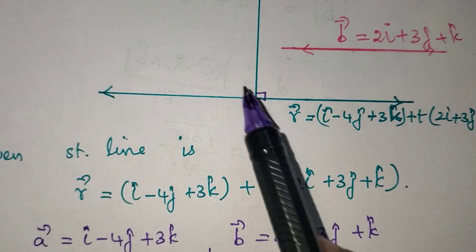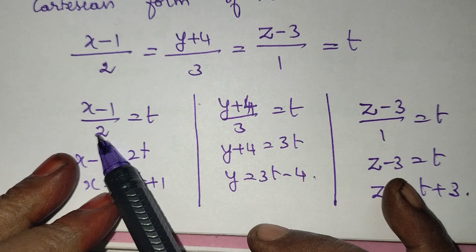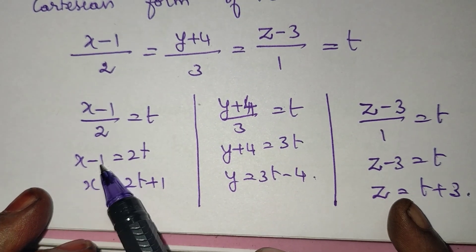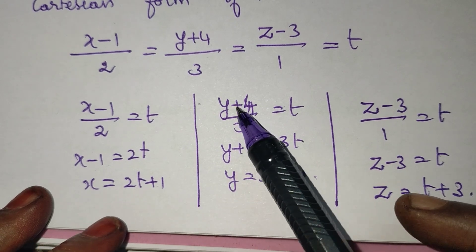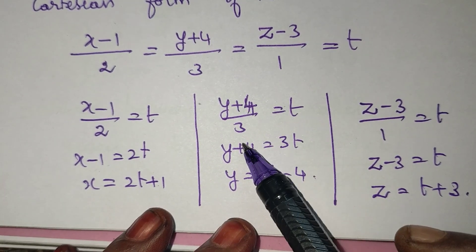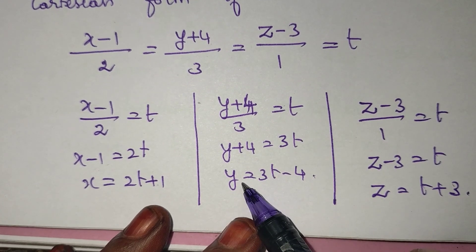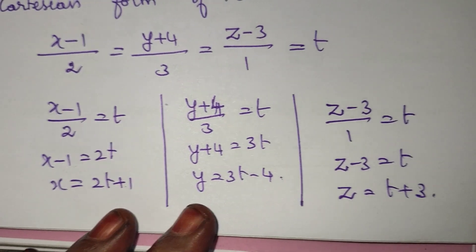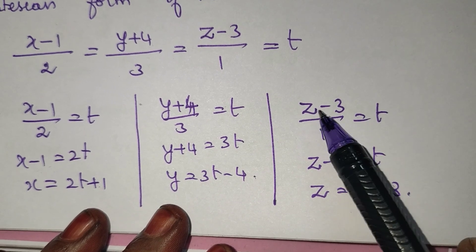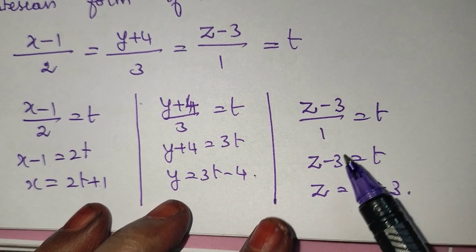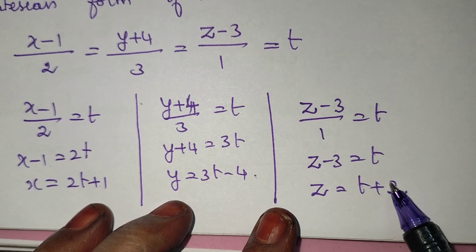Now, from the Cartesian form: (x - 1)/2 = t gives x = 2t + 1. (y - 4)/3 = t gives y = 3t - 4. (z - 3)/1 = t gives z = t + 3. So the point F on the line is (2t + 1, 3t - 4, t + 3).